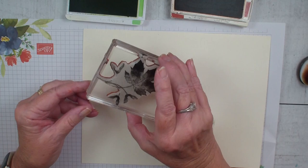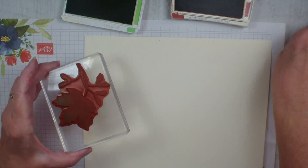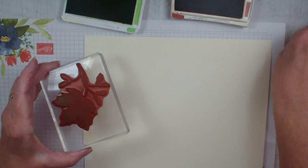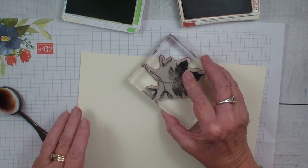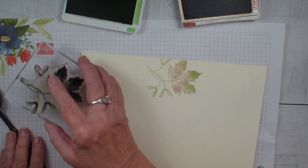So first, what I'm going to do is I'm going to take my Soft Seedling stamp set. I'm going to ink it in my Granny Apple Green. I'm going to go in with my blending brush and grab some Cajun Craze, and I'm just going to add that to my stamp. Now, I've got my score lines, and so I am going to be stamping right on those score lines.